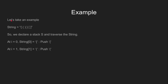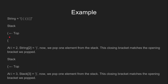Let's look at an example to make things clear. We declare a character stack s and we traverse through the string. At i equal to 2 we have a round closing bracket. We pop one element from the stack. This closing bracket matches the opening bracket we just popped — these two match. So we continue our algorithm, and the stack now becomes just the curly bracket at the top.